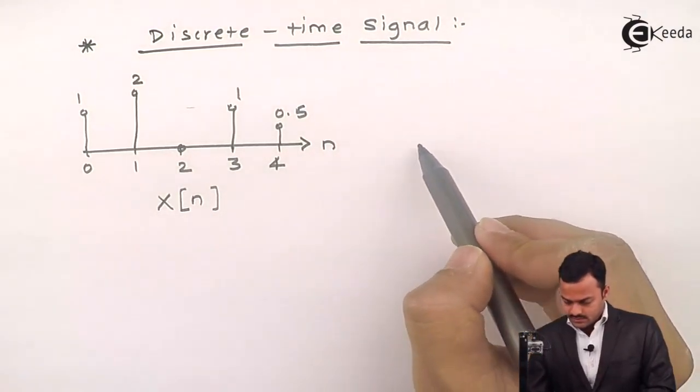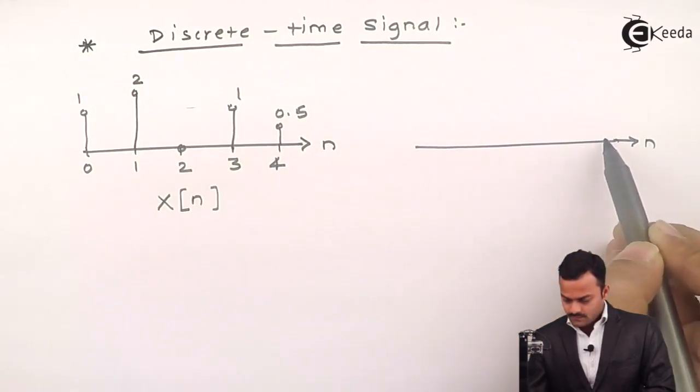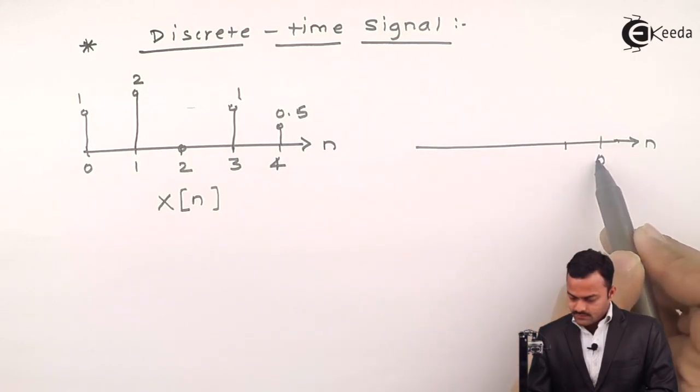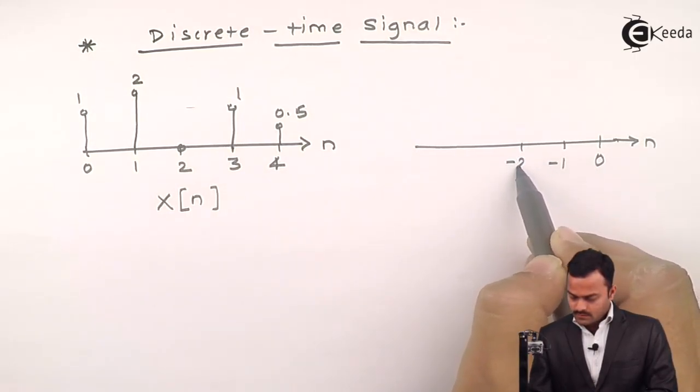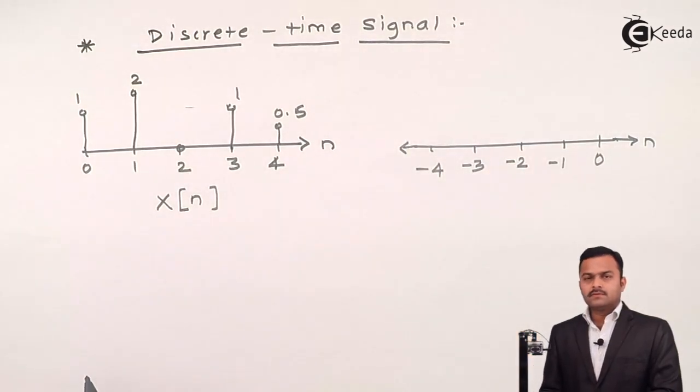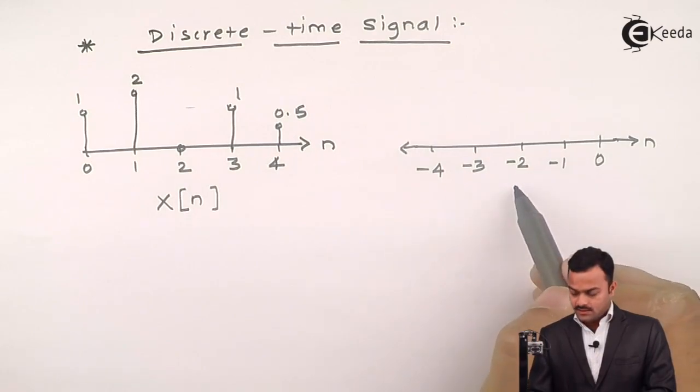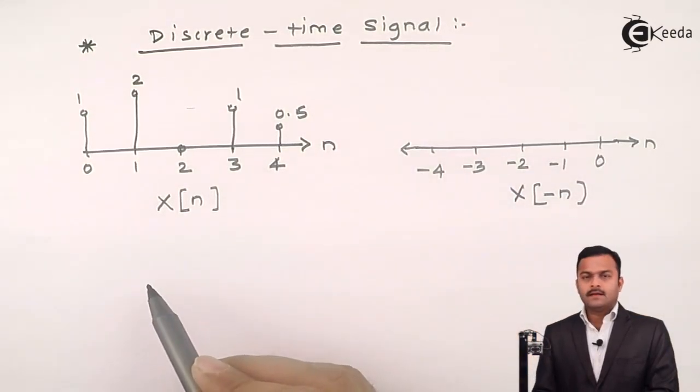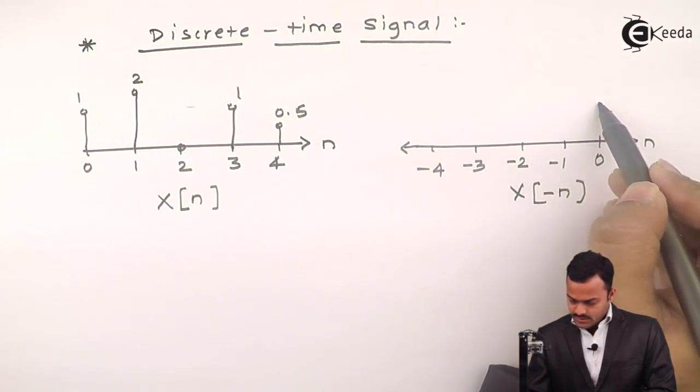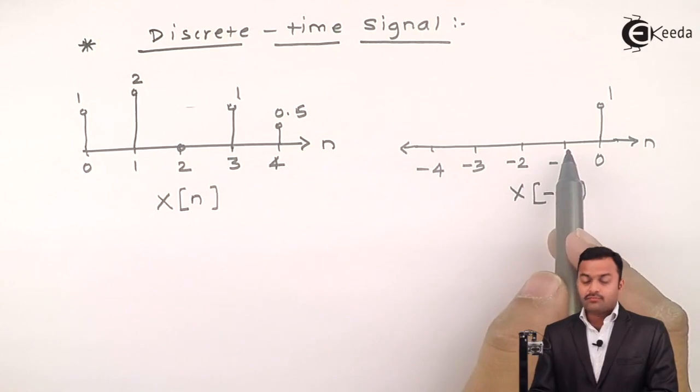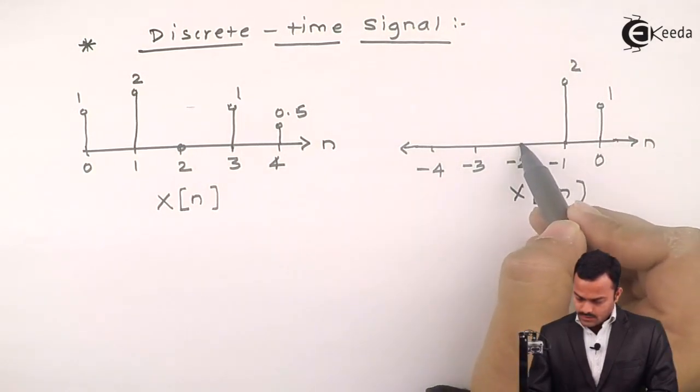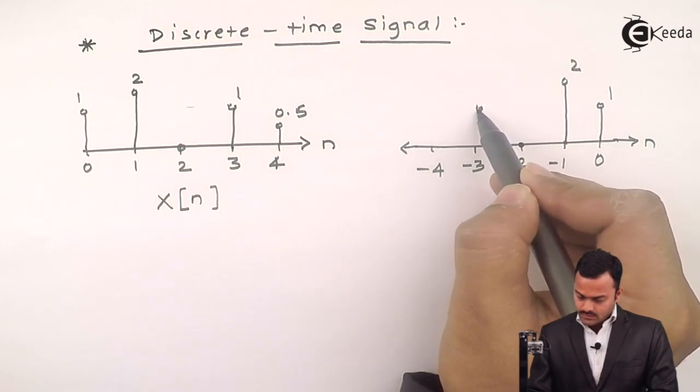We can do a time reversal to this. So, it becomes like this. The axis we will get is from 0, minus 1, minus 2, minus 3, and minus 4. So, what we can say over here, in a time reversal, the new sequence that we obtained is x of minus n, and we will have the value for x of 0, it is same as original signal, 1. But x of minus 1 will be x of 1, which is 2. And likewise, you will get all the related values.